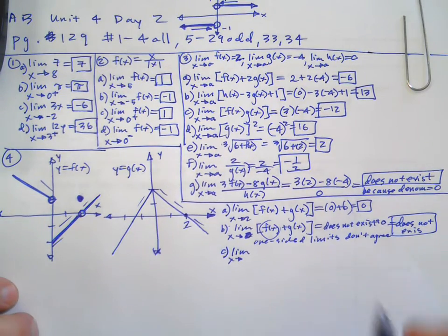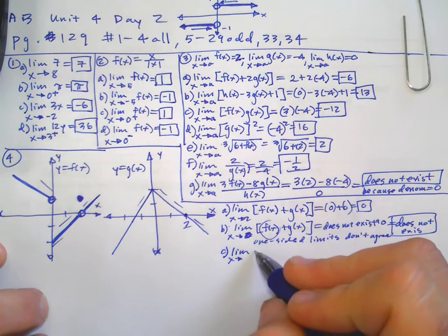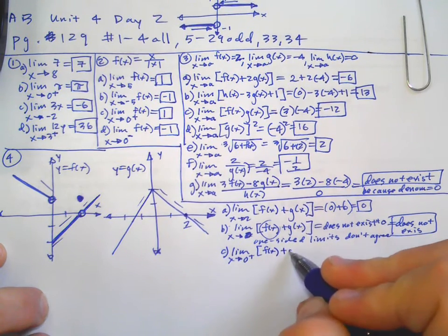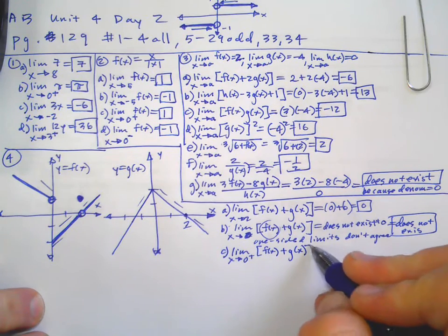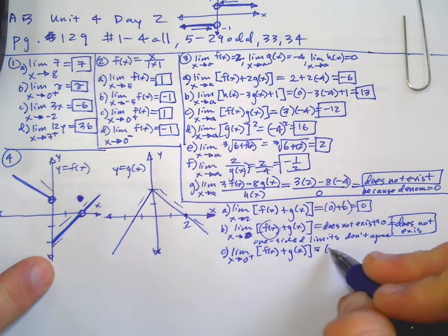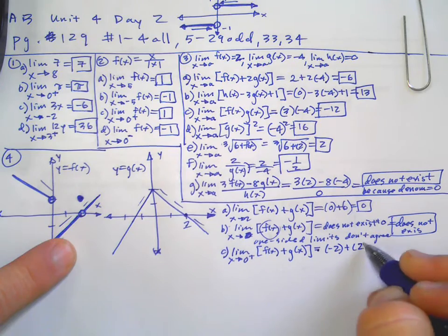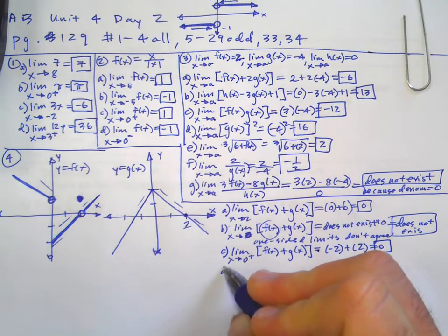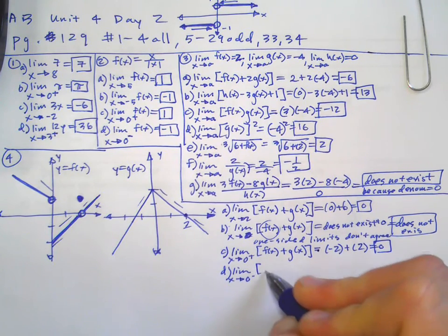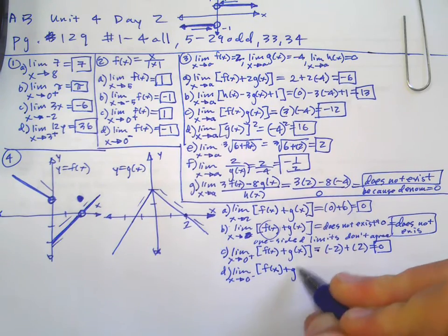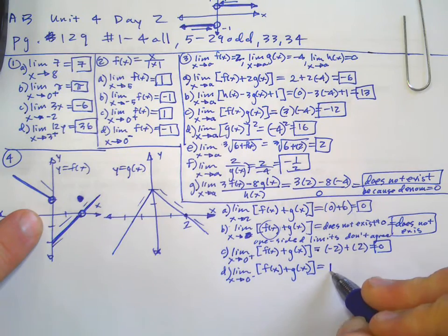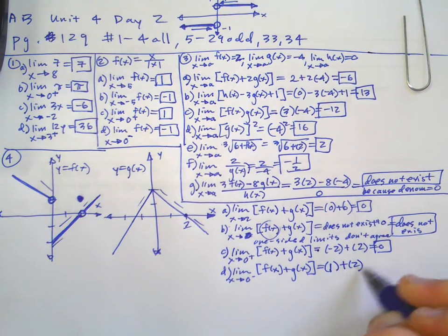Part C: limit as X approaches zero from the right of F of X plus G of X. This looks very similar to the last problem, but the one-sided limit is going to change things. As we approach zero from the right side, that's going to be negative two, and that's going to be positive two — and you're going to get zero. Then part D: limit as X approaches zero from the left. That's going to give you a different answer. On the left, this function is going to two — actually to one — and this one is going to two, so you get three.